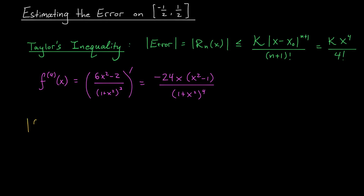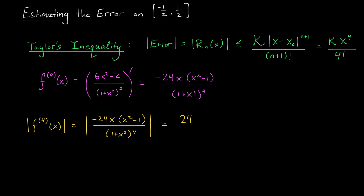My next step is to find an upper bound for the fourth derivative in absolute value, at least for x values between minus 1 half and 1 half. This can be a tricky task, but it's often easier when working with a simplified, factored expression. Looking at the absolute value of minus 24x times (x squared minus 1) over (1 plus x squared) to the 4th, I use the property that absolute values split over products and quotients: this equals 24 times |x| times |x squared minus 1| divided by |1 plus x squared| to the 4th.